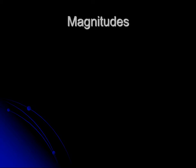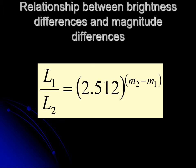We ended the last mini-lecture introducing the idea of magnitudes. I'm going to do a couple of examples. The ratio of brightness — L stands for luminosity here — is the brightness of one star compared to the brightness of another star.